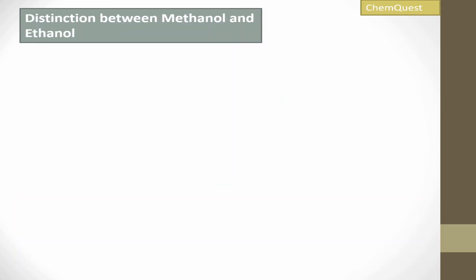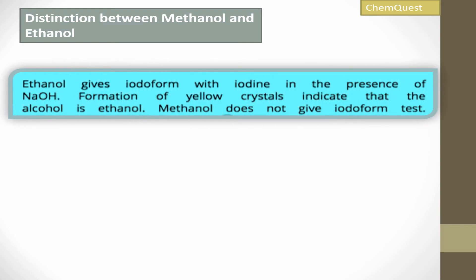Next, we will see the distinction between methanol and ethanol. So how can you distinguish between methanol and ethanol? Methanol is CH₃OH and ethanol is C₂H₅OH. In the case of methanol, it does not give the iodoform test with iodine.